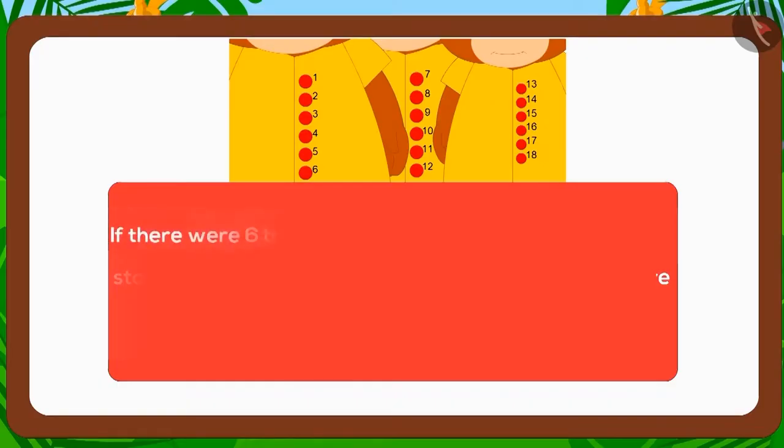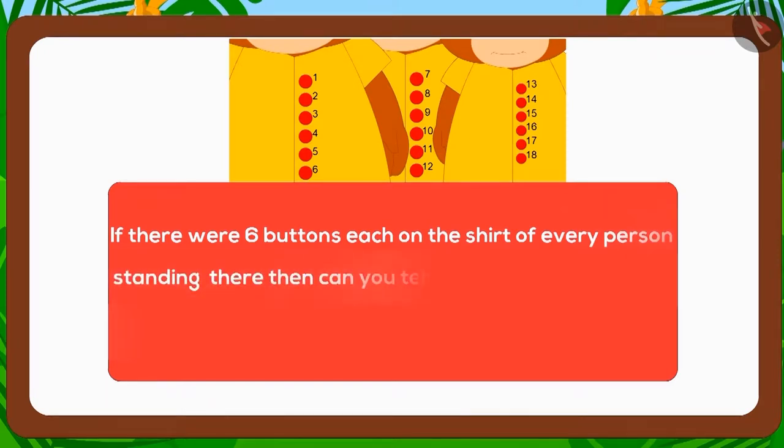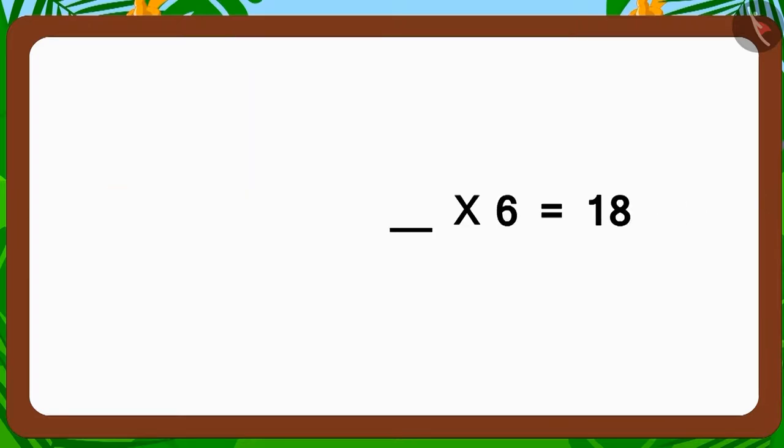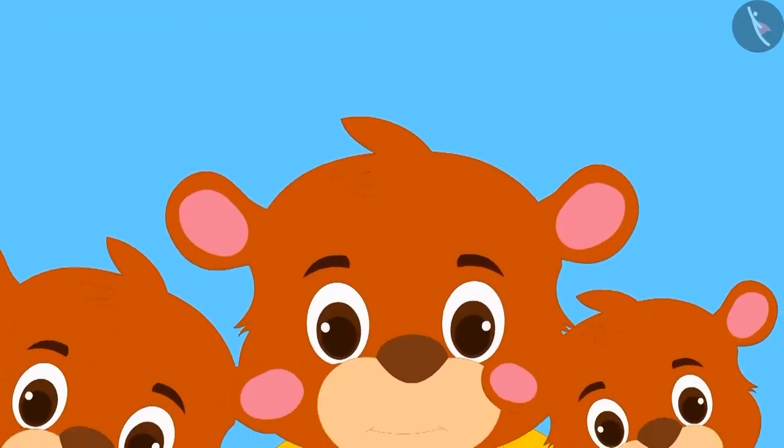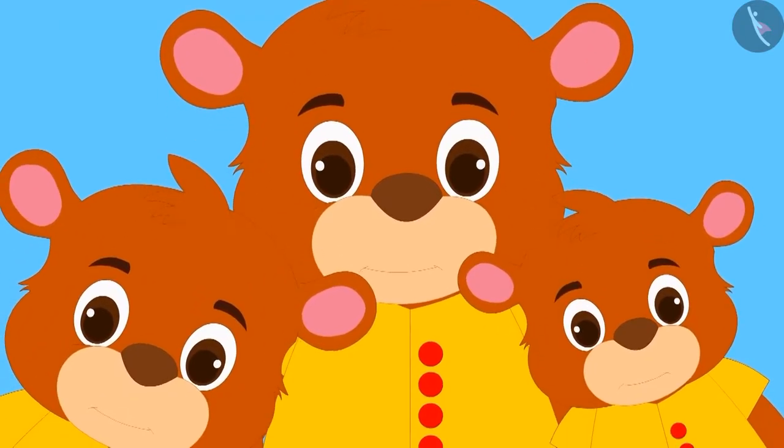If every person present there had six buttons each on their shirt, then can you tell how many people were standing there? Yes, you have solved it correctly. Three people were standing in front of Babalu.